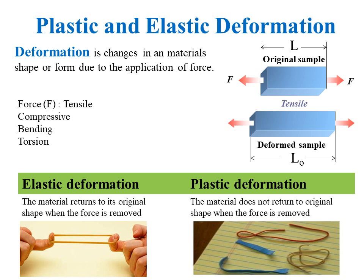In elastic deformation, when force is applied the material deforms, but the deformation disappears when the external force is removed and the material returns to its original shape. It depends mainly on the chemical bonding of the material. The best example of elastic deformation comes from elastomers such as rubber — when we pull it, it stretches, and when we stop pulling, it returns to its original size.